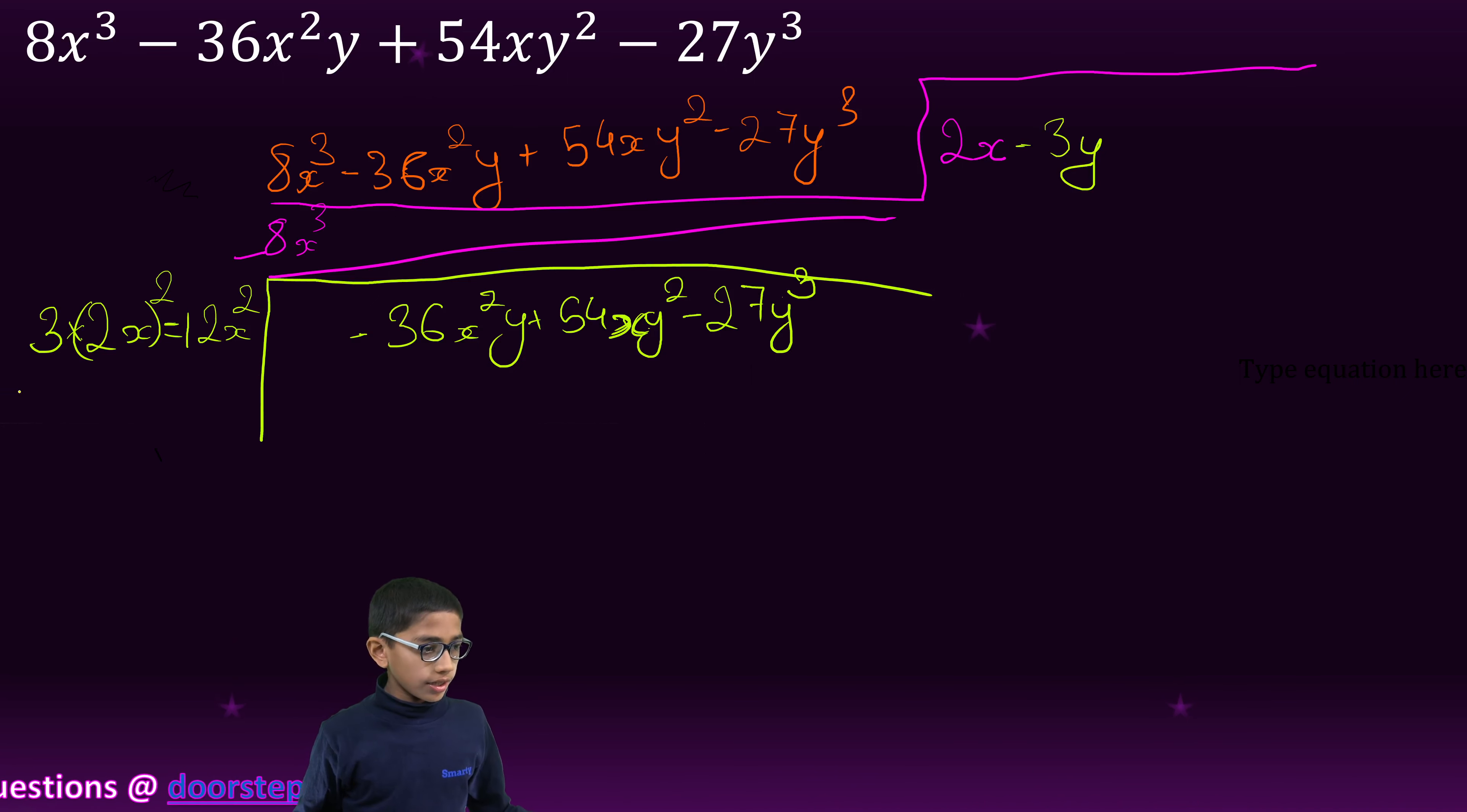The second time we will multiply 3 into the first term into the second term. Our answer is 6y into minus 3y.